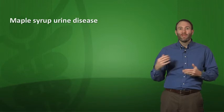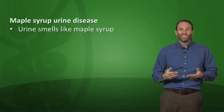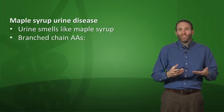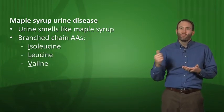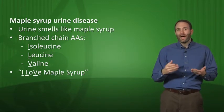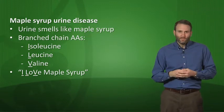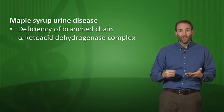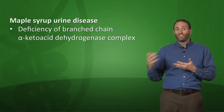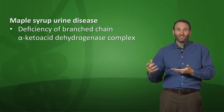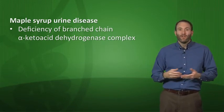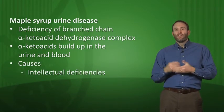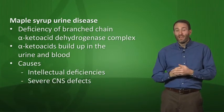Maple syrup urine disease causes the urine to smell like maple syrup. This is because of a buildup of the branched-chain amino acids isoleucine, leucine, and valine — remember the mnemonic 'I Love Maple Syrup' (I=isoleucine, L=leucine, V=valine). It's caused by deficiency of the branched-chain alpha-keto acid dehydrogenase complex. These amino acids don't get degraded and build up along with corresponding alpha-keto acids, causing intellectual deficiencies, severe CNS defects, and a high mortality rate.